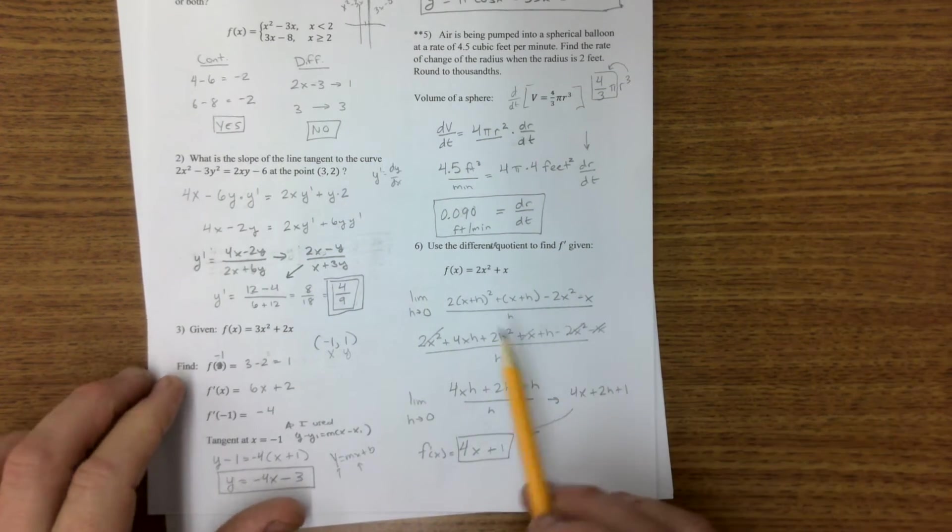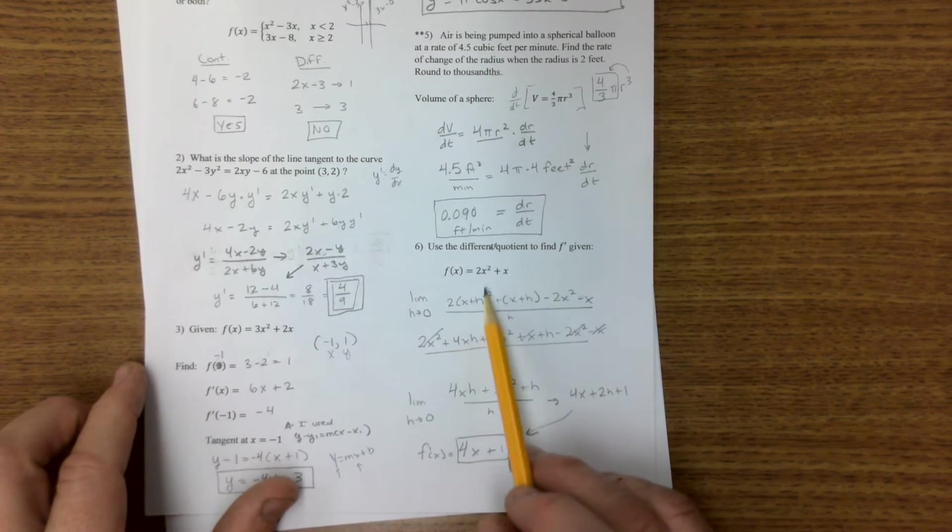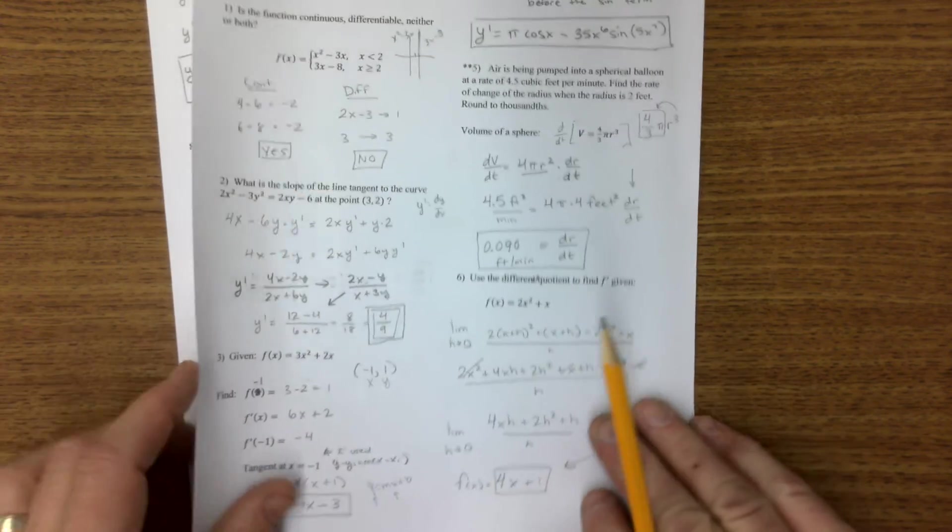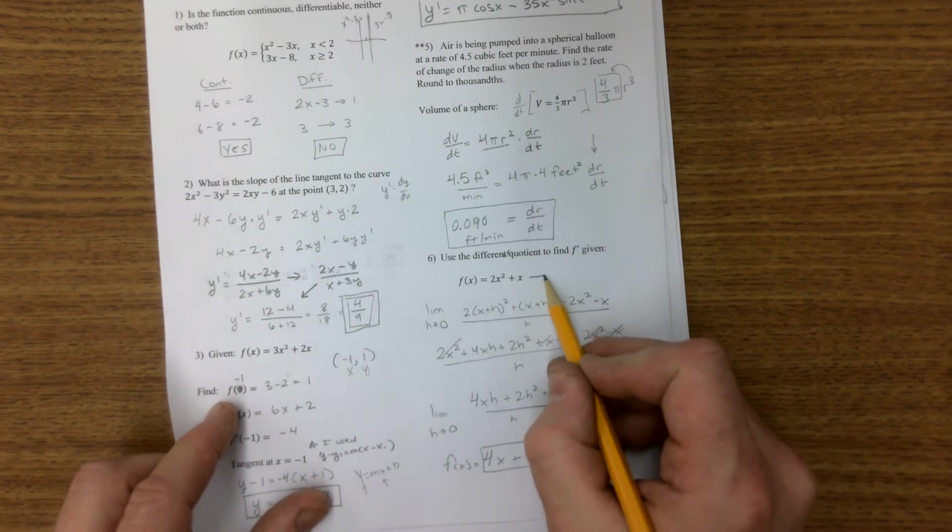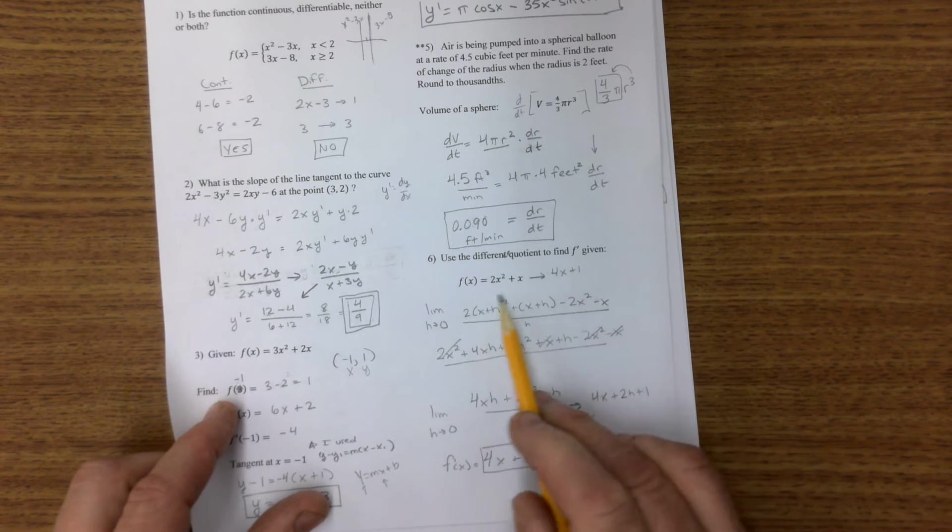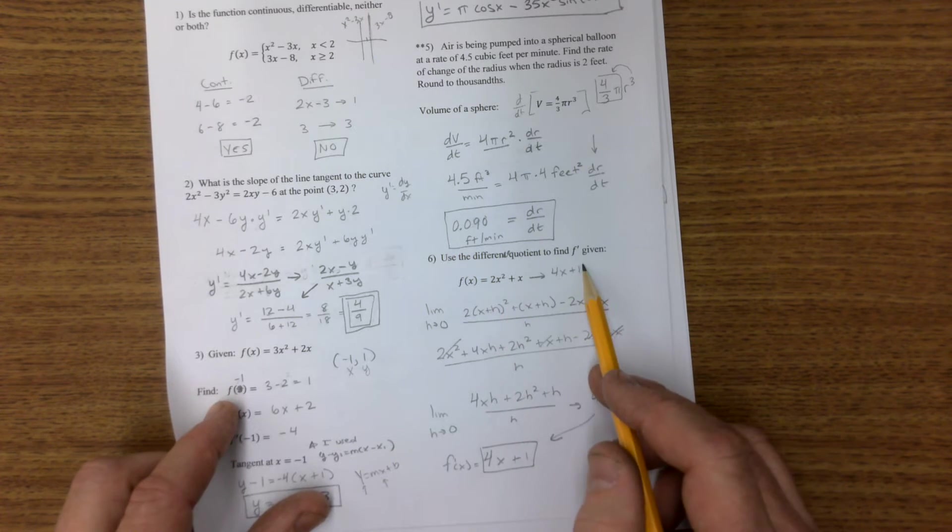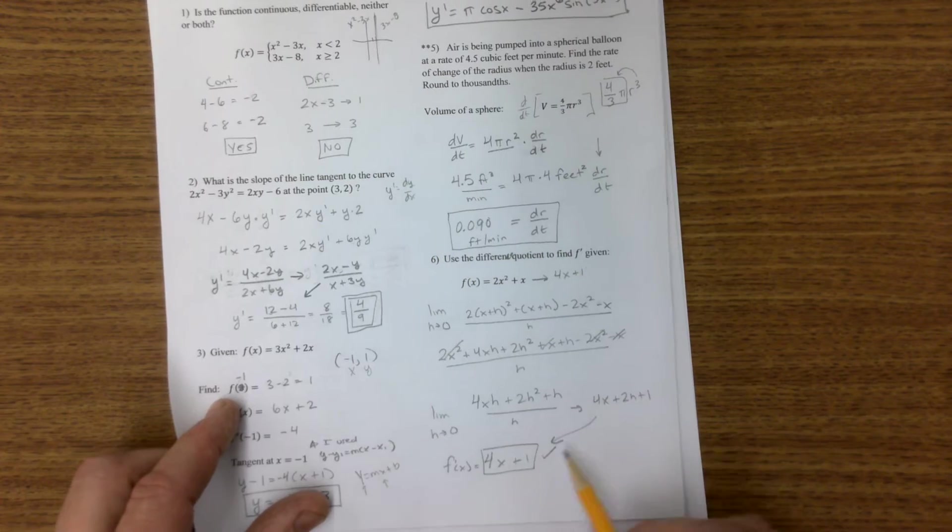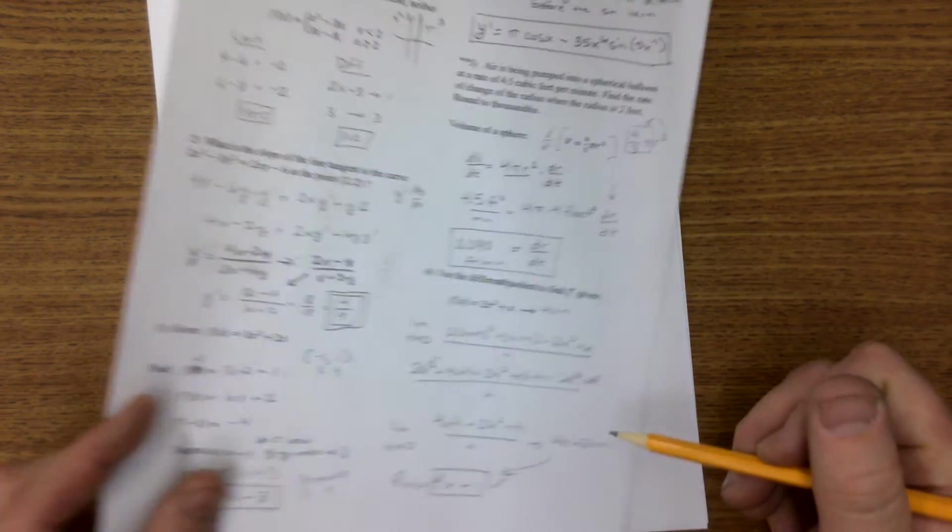Difference quotient. Plug in x plus h for all the x's. And always check this. I mean, we can do the power rule immediately and get 4x plus 1. There's the power rule right there. So this has to match down here. If it doesn't match, we've done something wrong.